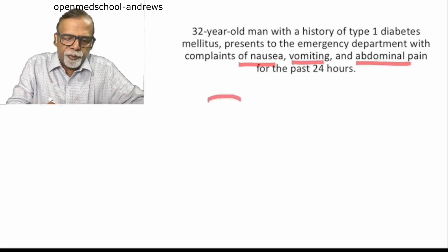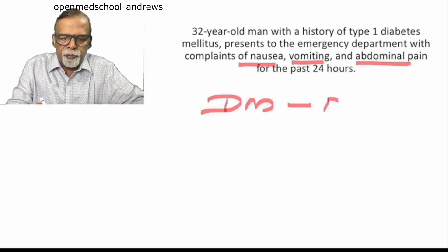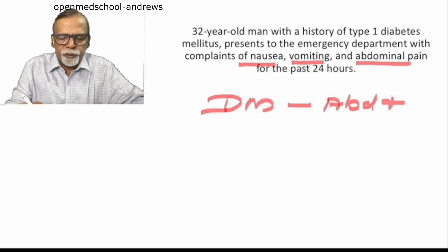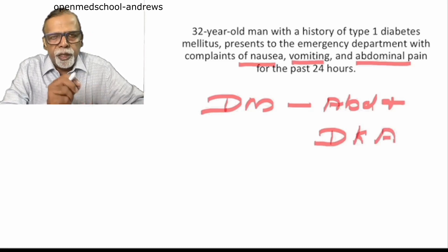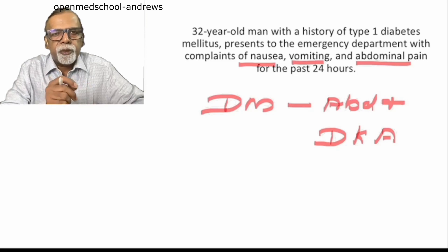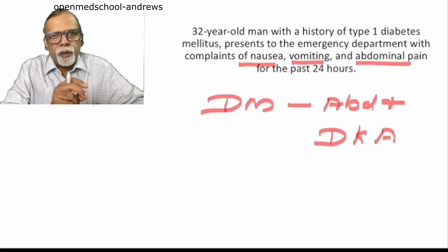Any patient with diabetes mellitus presenting with abdominal pain, plus or minus vomiting, you should consider the possibility of diabetic ketoacidosis. DKA can occur in type 1 and sometimes in type 2 at times of stress. Stress includes surgery, infections, etc.